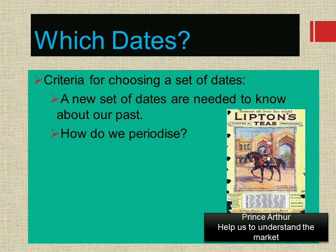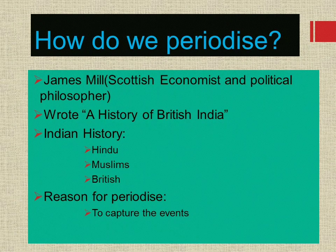So we need a set of dates to know about our past. How do we periodize? See this picture — a Lipton's tea advertisement. Prince Arthur gave an advertisement for this tea, which helps us understand the market. James Mill, a Scottish economist and political philosopher, wrote a book, 'A History of British India,' in 1817. In that book, he classified Indian history into Hindu, Muslim, and British periods. The reason to periodize was to capture events of the past.